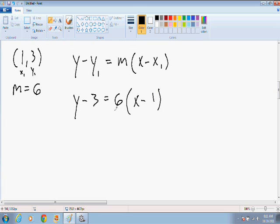Now let's distribute the 6 to get rid of the parentheses. So y - 3 = 6x - 6. And if we add 3 to both sides, we get our final equation to be y = 6x - 3. And this is our final answer.